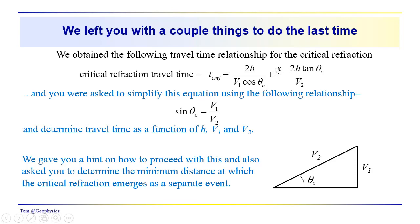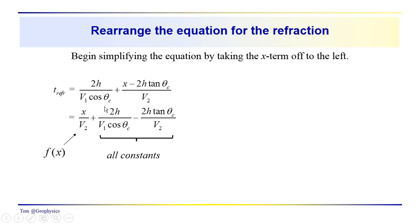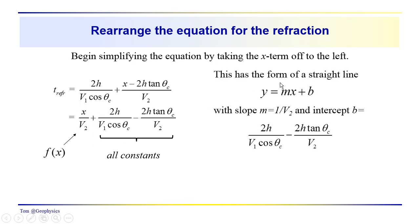We can use this relationship to simplify the equation. We can see that this equation is linear in x — there's x dependence here — but we have these complicated constant terms, and how do those translate into a slope? We can see fairly easily that this is going to be a straight line. The first thing to do is pull the x term out, separating x over v2 from the constant terms involving 2h and the trig functions.